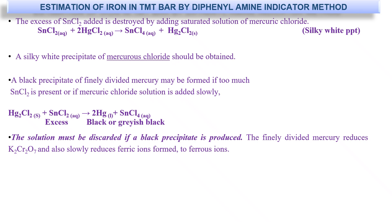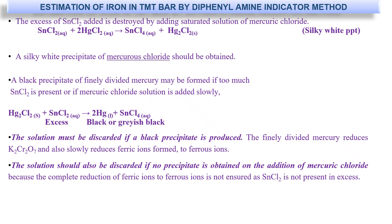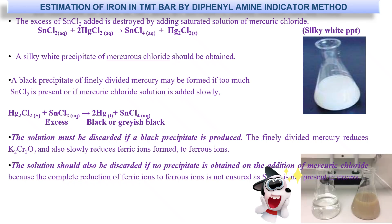We do not want this reaction to occur. The solution must be discarded if you see a black precipitate, as the finely divided mercury reduces the potassium dichromate and also reduces the ferric ions formed back to ferrous ions. Also discard the solution if you see no precipitate on the addition of mercuric chloride, because complete reduction of ferric ions to ferrous ions is not ensured.